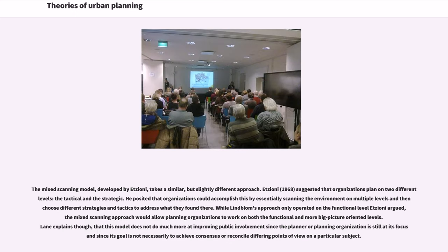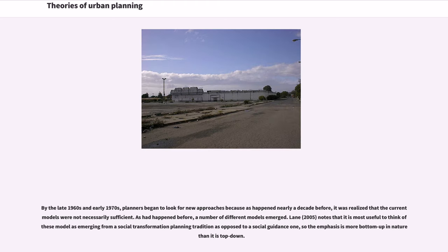The mixed scanning model, developed by Etzioni, takes a similar but slightly different approach. Etzioni suggested that organizations plan on two different levels: the tactical and the strategic. He posited that organizations could accomplish this by essentially scanning the environment on multiple levels and then choosing different strategies and tactics to address what they found. While Lindblom's approach only operated on the functional level, Etzioni argued the mixed scanning approach would allow planning organizations to work on both the functional and more big-picture oriented levels. However, this model does not do much more to improve public involvement, since the planner or planning organization is still at its focus and since its goal is not necessarily to achieve consensus or reconcile differing points of view.